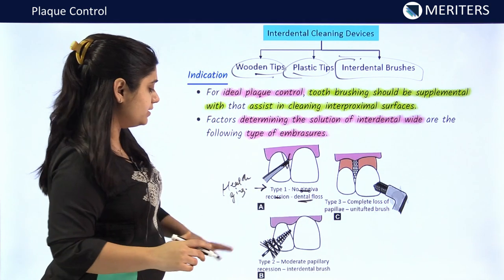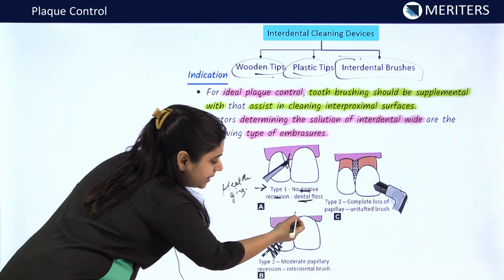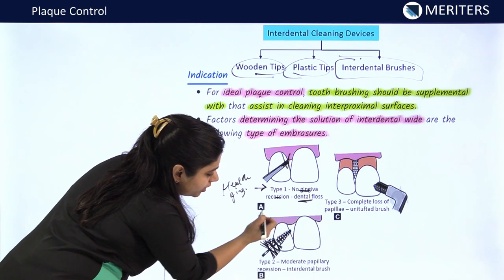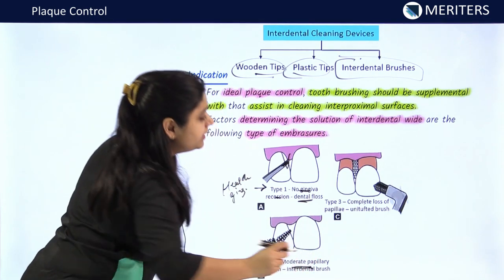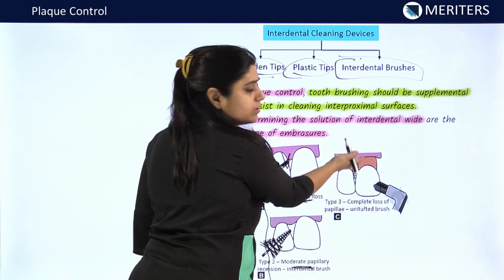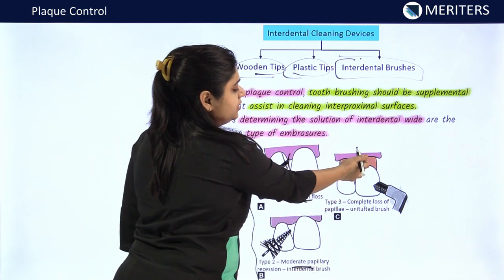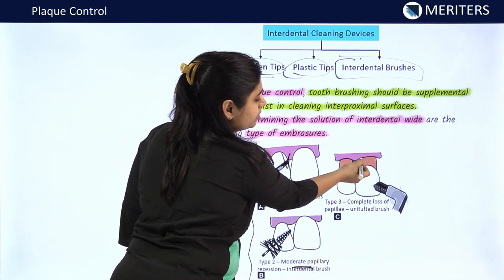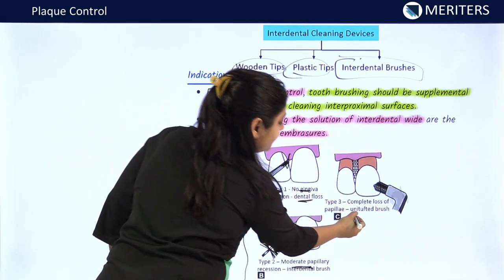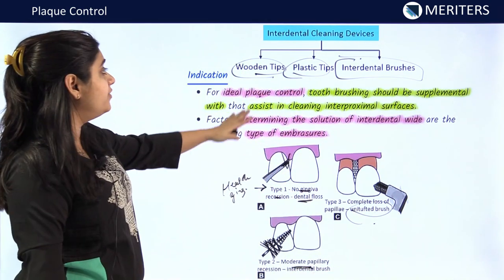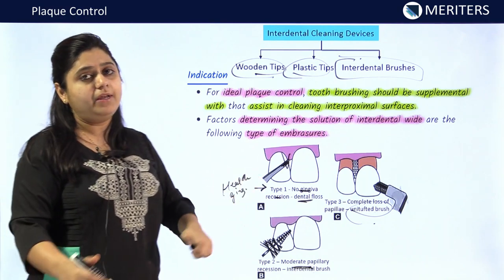In type 2 embrasures, the interdental papilla has receded but is still above the CEJ and below the contact point; interdental brushes can be used. In type 3 embrasures, where there is complete loss of interdental papilla — the tip is below the CEJ and below the contact point with root exposure — unit-tufted brushes should be used.